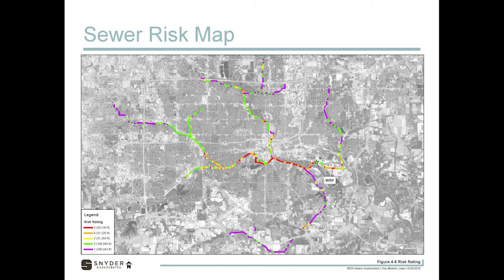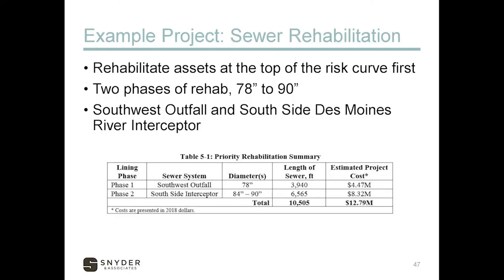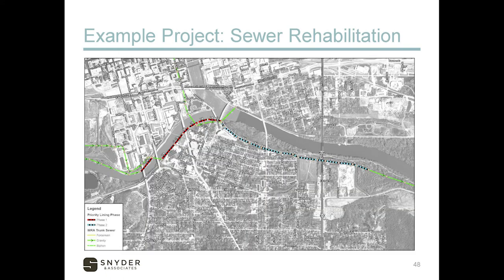The older sewer down through the main part of the older part of town would be expected to have a higher rating, and that's what we're seeing. Visualizing on the map really helps break that down. In our case, it was identified to do two phases of rehabilitation on the 78-inch to 90-inch sewer, totaling about $13 million estimated cost. Getting into this detail means figuring out bypassing requirements — you can't ask half the town not to flush, so you've got to be able to bypass the sewer.